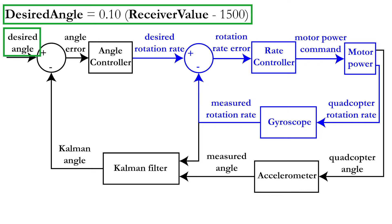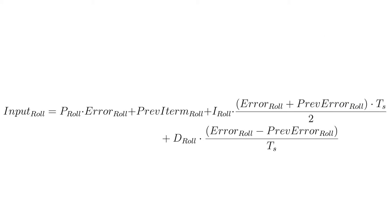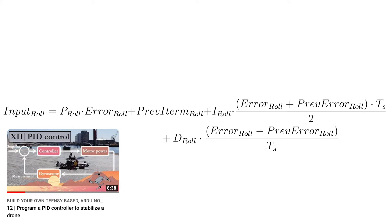Now that we know the equation for the desired angle, let's proceed to the angle controller. For the angle controller, we will simply use the PID equation derived in part 12 for the rotation rates with some small modifications. First, the error will be defined as the difference between the desired angle and the Kalman angle, instead of the difference between the rotation rates.